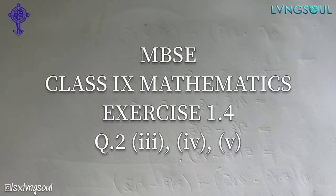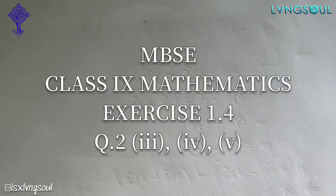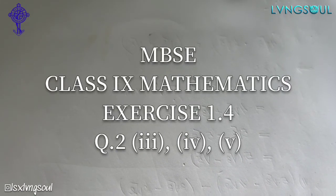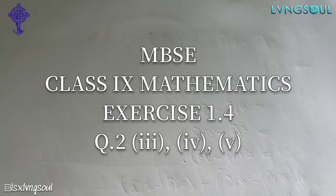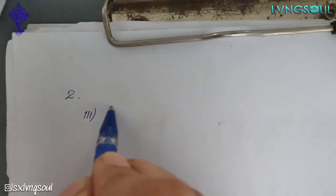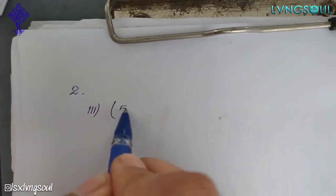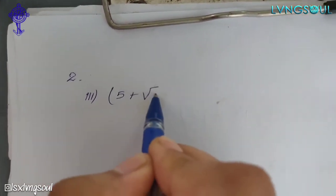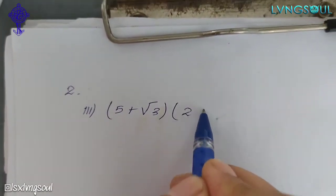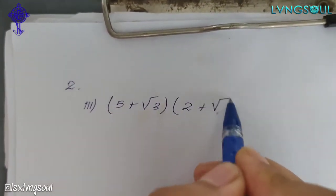Now, we'll continue on exercise 1.4, question number 2, that is on sub number 3. Question number 2: simplify. Sub number 3 is 5 plus root 3, an irrational number, into 2 plus root 2.